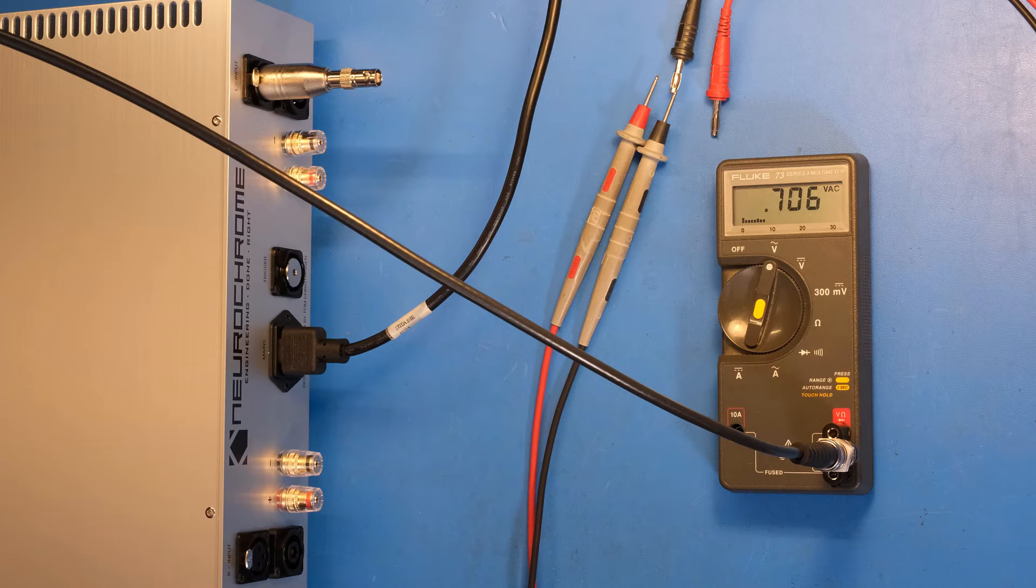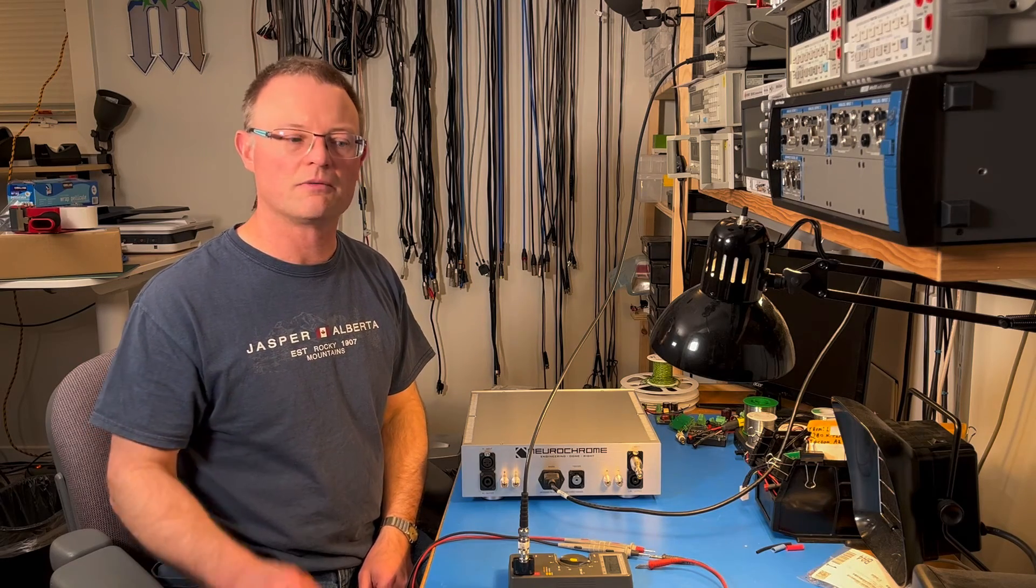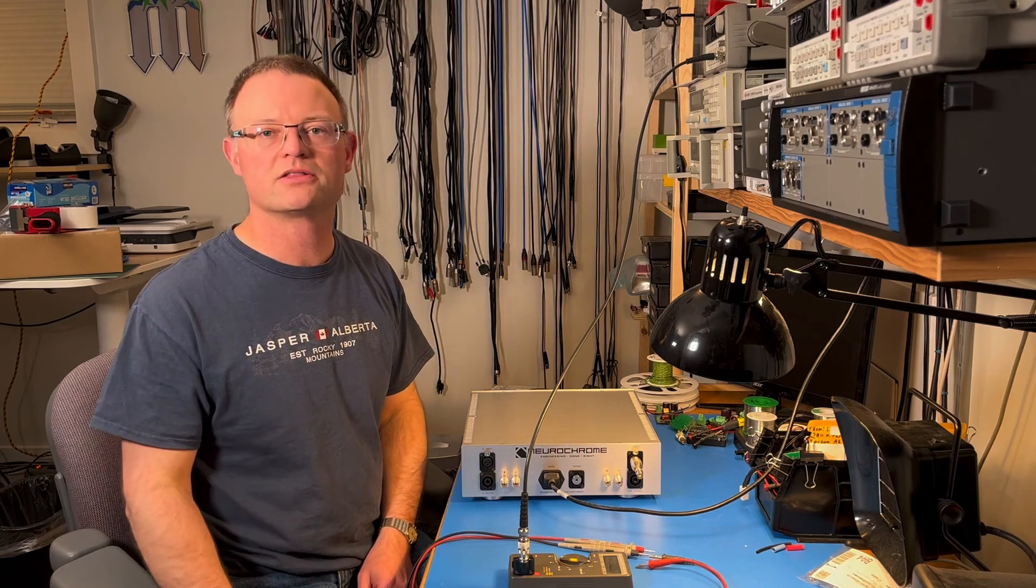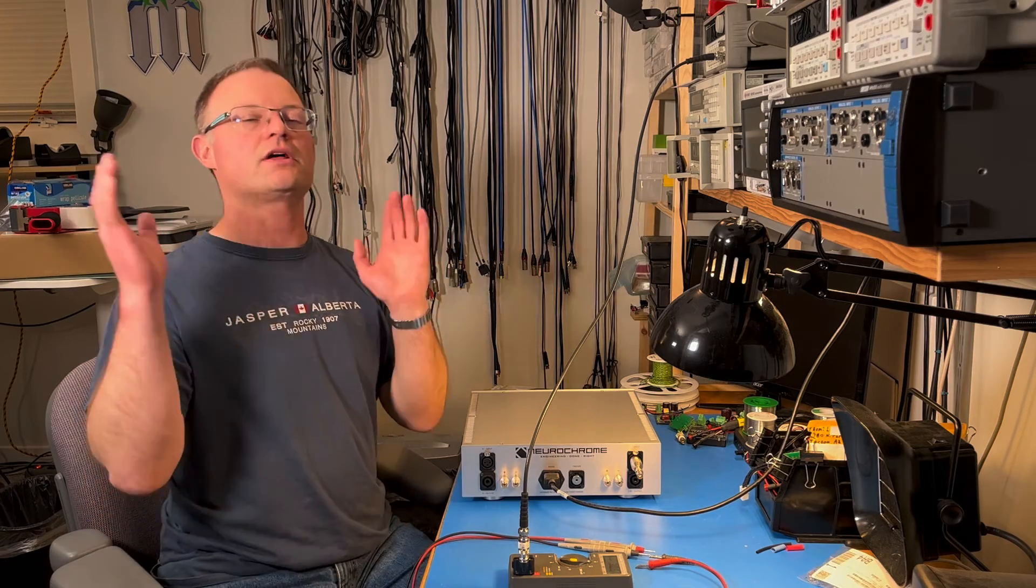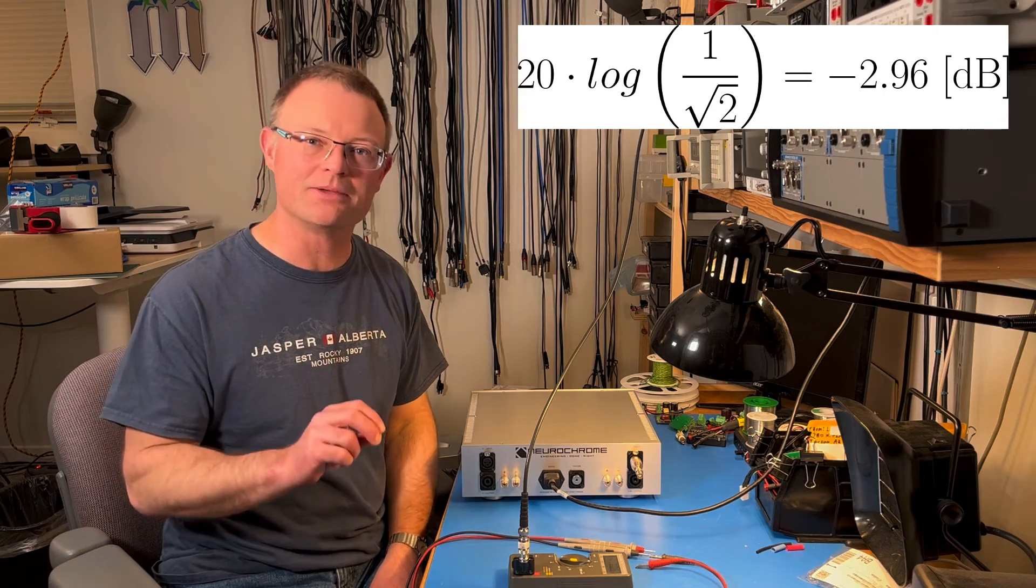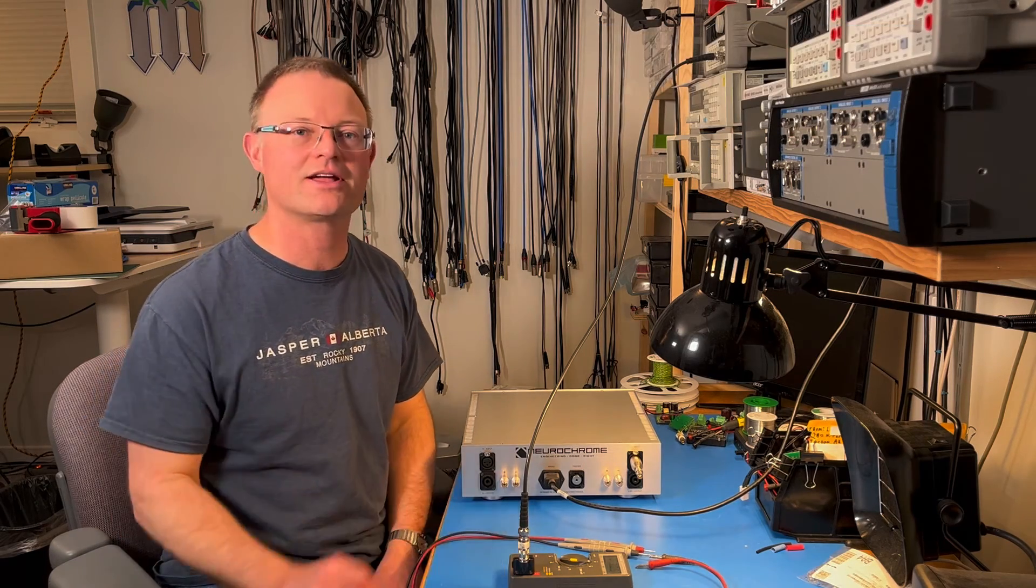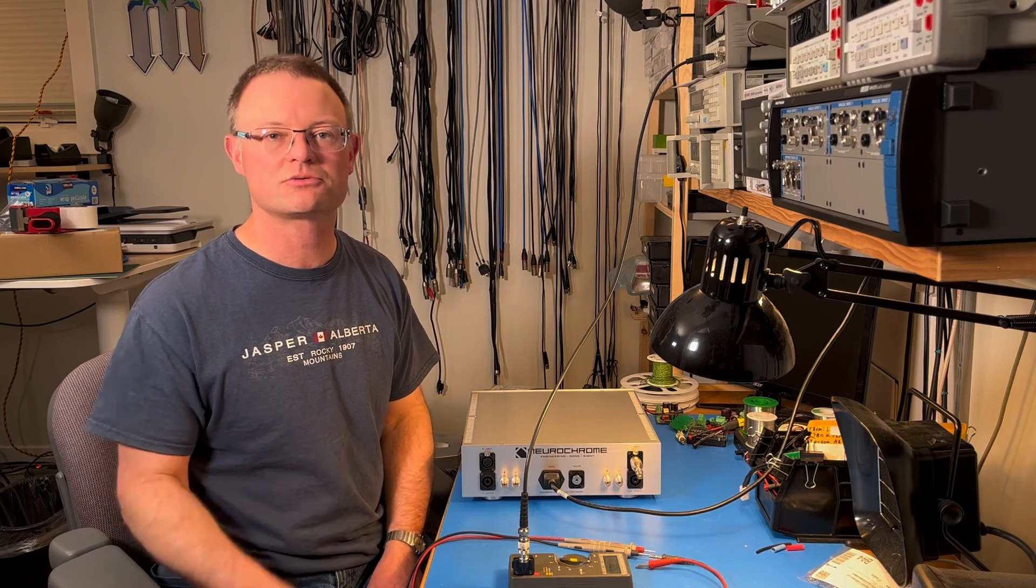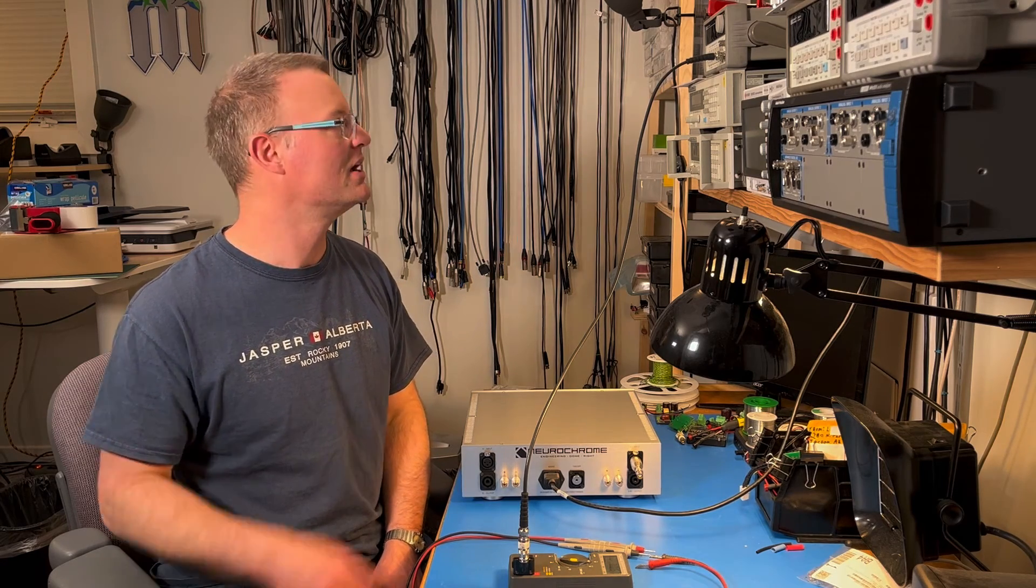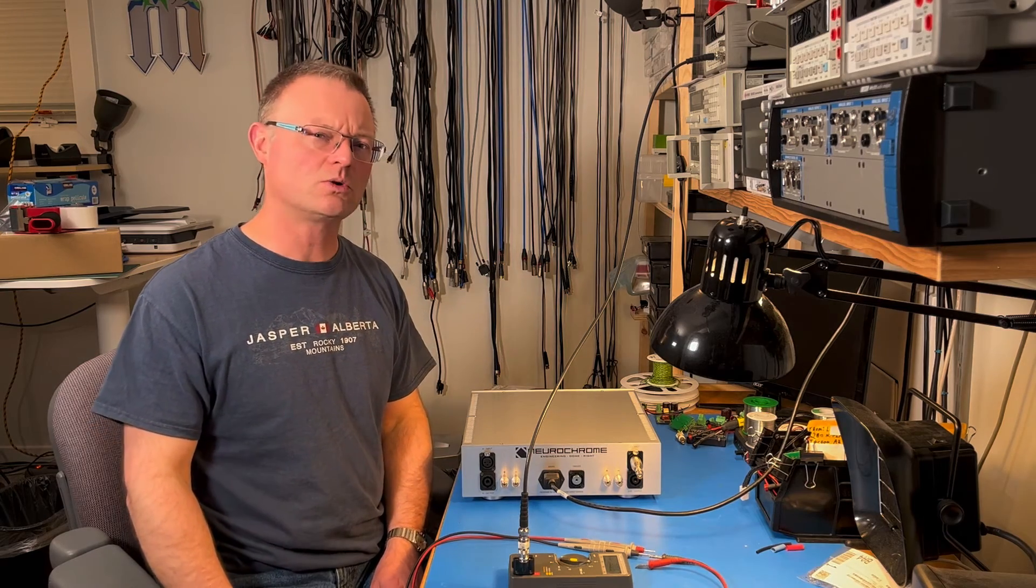All right. So I chose this specific number, 706 millivolts, because that is one volt divided by the square root of two. And where the hell did that come from? That is the minus 3 dB point of this meter. So this meter has a bandwidth or a minus 3 dB bandwidth to be specific of 5.2 kilohertz. That's not a whole lot.